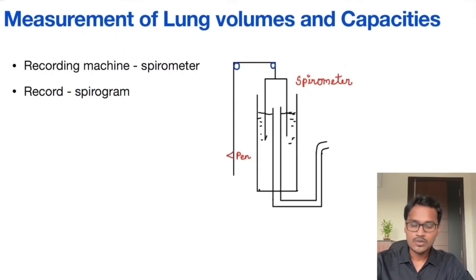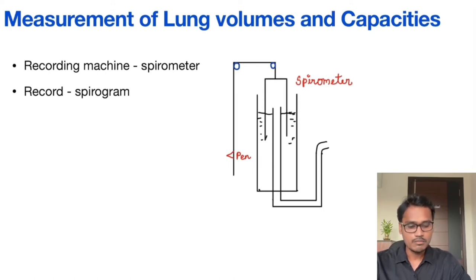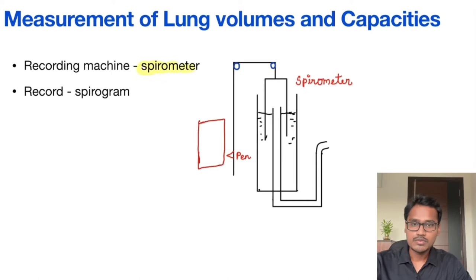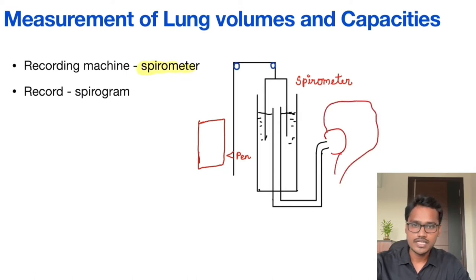As all of us know, lung volumes and capacities are measured by the instrument called spirometer. The graphical recording which we get on a sheet of paper is called a spirogram. This instrument — as many of us would have seen — requires the subject to blow out through it, the spirometer. And the typical instruction goes like this.